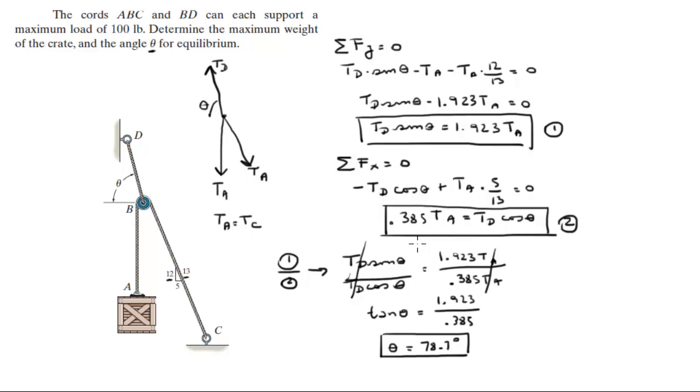Now what we can do is we can plug in theta into one of the equations. Let's plug it into this one, and when you plug in theta right here, you're going to get that this equation becomes 0.385 TA is equal to 0.196 TD, which means that TA is equal to 0.51 TD.